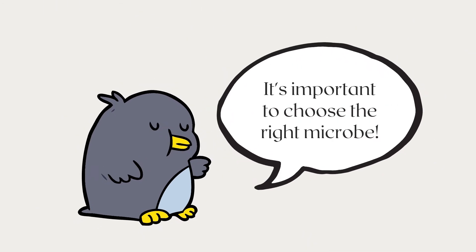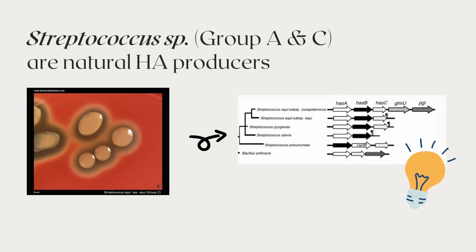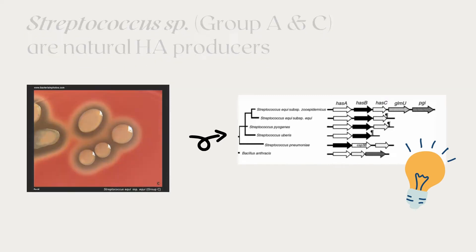It is very important to choose the right microbe for the job. Both groups A and C of Streptococci bacteria are known to be natural producers of hyaluronic acid. They are even claimed to be the most effective microbe since they have a complete set of genes A to E in one operon. However, there are some safety concerns regarding these groups because they are known to be pathogenic.